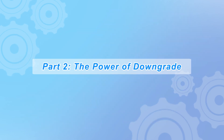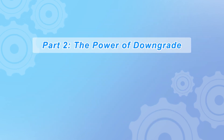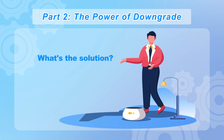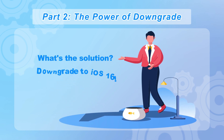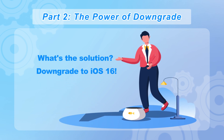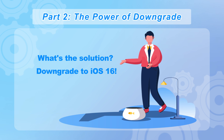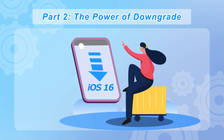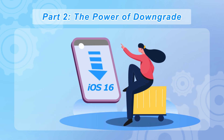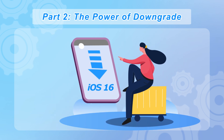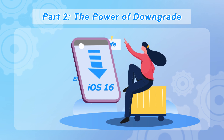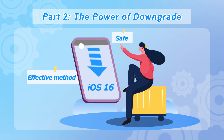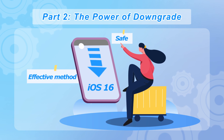Part two: the power of downgrade. So what's the solution? Downgrade to iOS 16. This is the key to restoring stability and getting your phone back on track. Downgrading is a safe and effective method to revert to a more reliable version.